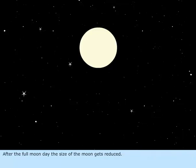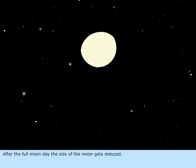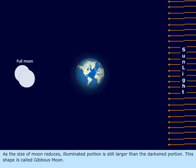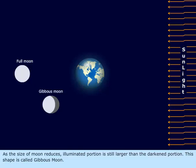After the full moon day, the size of the moon gets reduced. As the size of the moon reduces, the illuminated portion is still larger than the darkened portion. This shape is called gibbous moon.